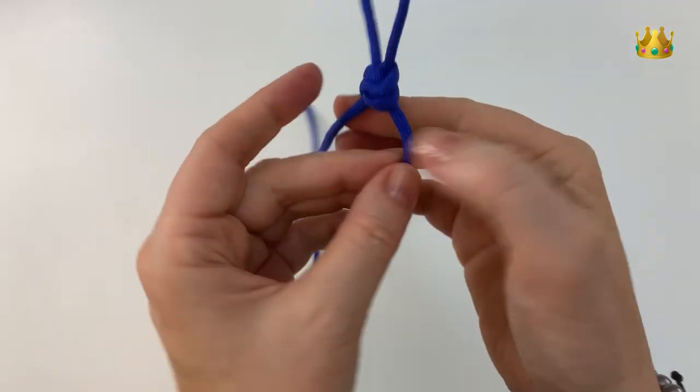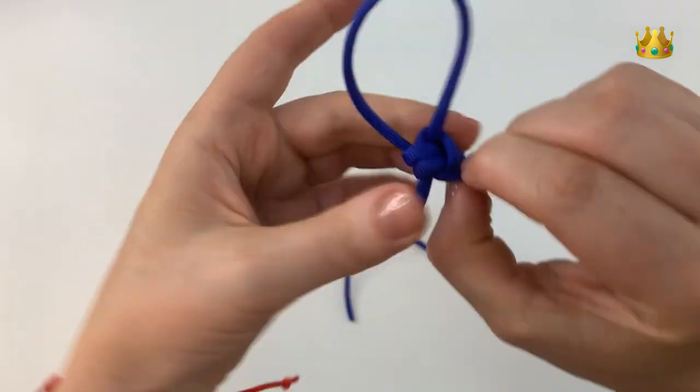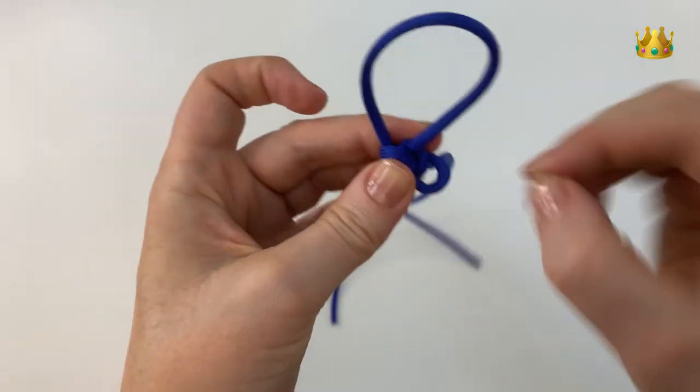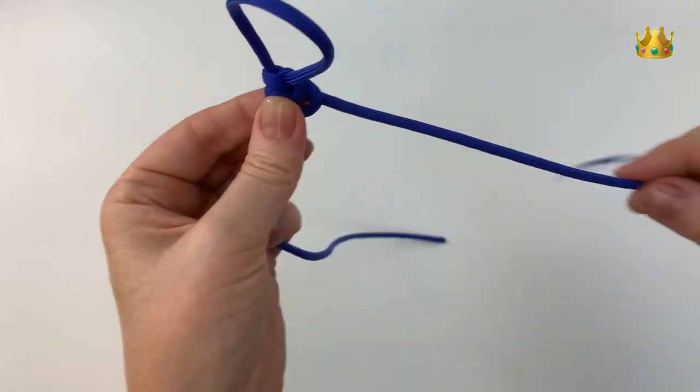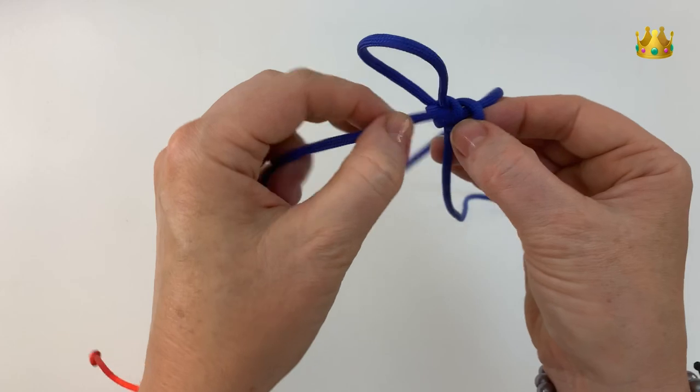So rotating to the right, loosening up that bottom right side loop and then bringing your right side cord around the back to the left and placing it down that loosened loop.